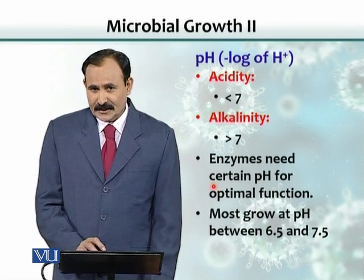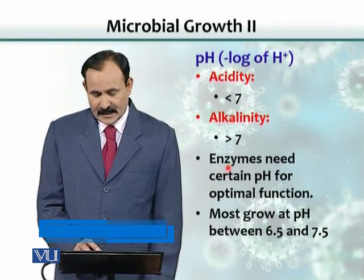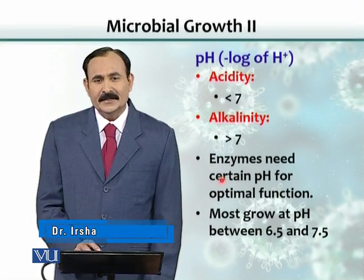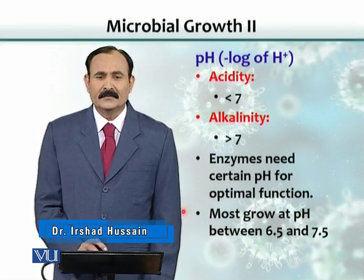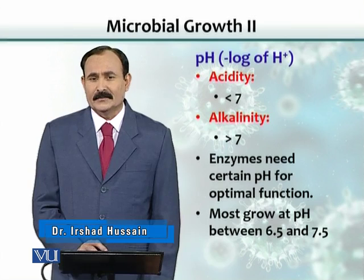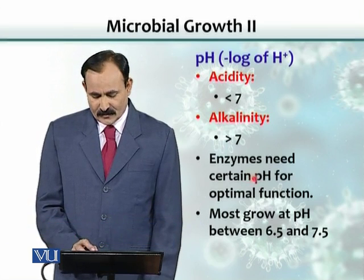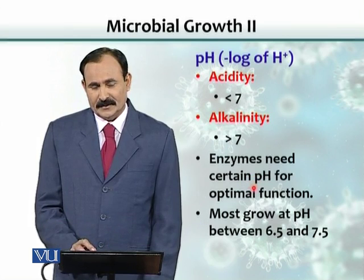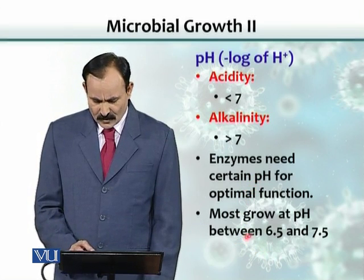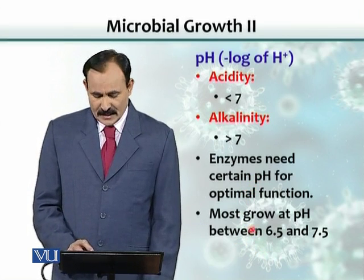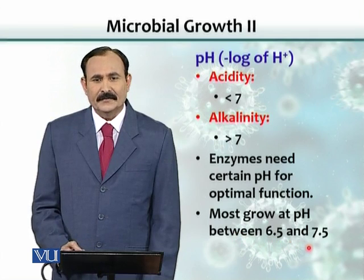Why is a certain pH needed for bacterial growth? It is because enzymes are pH sensitive. Enzymes that are involved in metabolic and catabolic pathways require a certain pH for their optimal work. Mostly bacteria grow at a pH between 6.5 and 7.5.